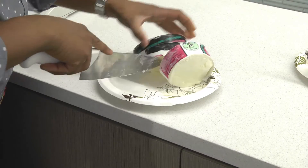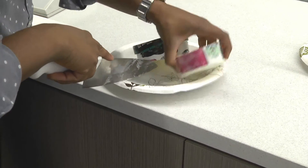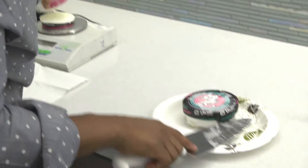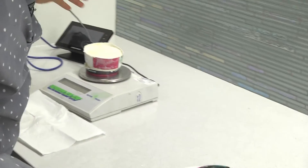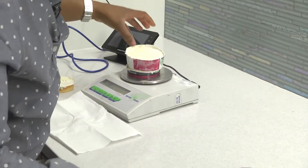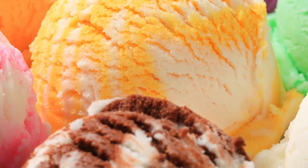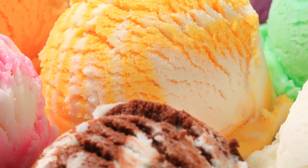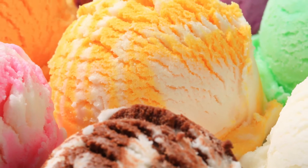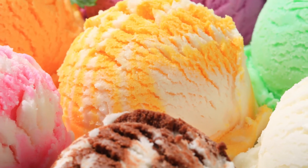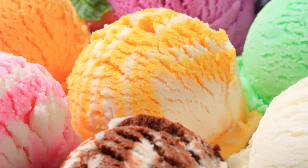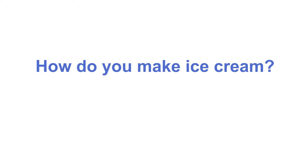Food sciences play such an interesting role in the creation of ice cream, from formulation development all the way to processing, to adding those variegates, which are maybe like that chocolate swirl or caramel swirl. Ice cream is actually a really fun, intriguing process.